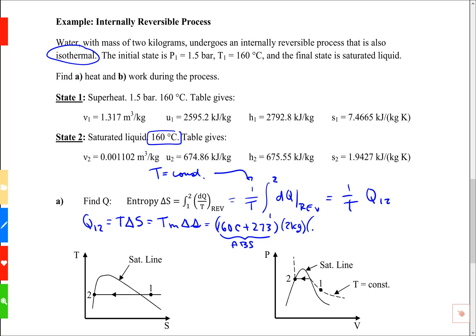My entropy change, state 1, I'm sorry, ΔS is s2 minus s1. So s2 is first. I've got 1.9427. I'm subtracting s1 which is 7.4665. And that's in kilojoules per kilogram per kelvin. And when I crunch that I get minus 4783.6 kilojoules.